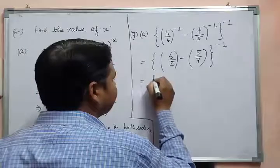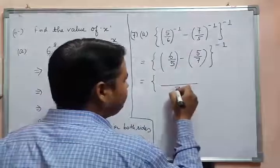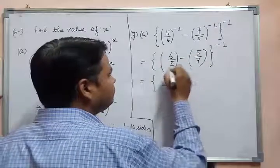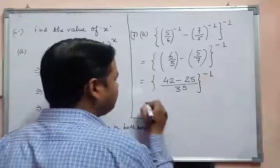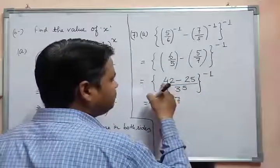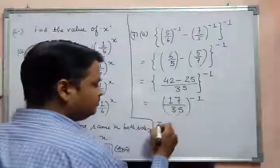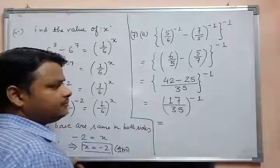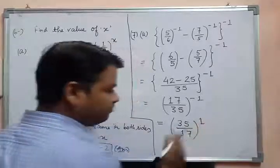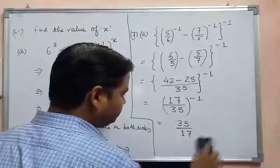Now take the LCM of 5 and 7, which is 35. Then multiply: 7×6=42, minus 5×5=25. Subtracting: 42 minus 25, we get 17 upon 35, to the power minus 1. Again, remove the minus 1 using the same rule: (17/35) to the power minus 1 becomes 35/17. So the answer is 35 upon 17.